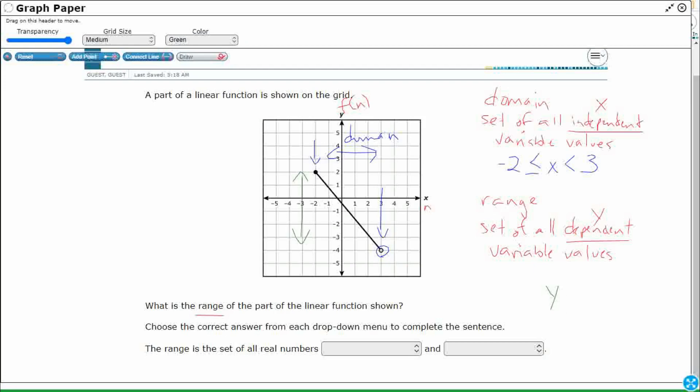So y is greater than what? y is greater than negative four. Now, it's not greater than or equal to, it's just greater than, because it's got the open circle. But it's going to be less than or equal to, and we're sitting right there at two. So we're looking at the y values here. So negative four and two. This is how we would write the answer in an expression.